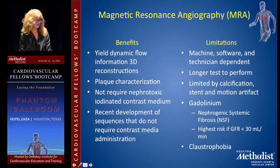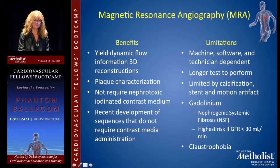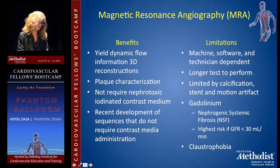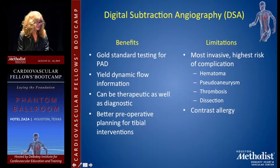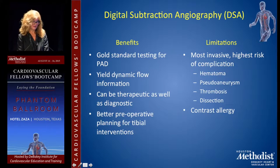MRA has the advantage of providing some dynamic information without the same contrast complications, though a subgroup with GFR less than 30 or acute GFR changes are at highest risk for gadolinium-related complications. Claustrophobia is also a problem for some patients. DSA remains the gold standard against which all studies are compared, but it is invasive and carries associated complications.